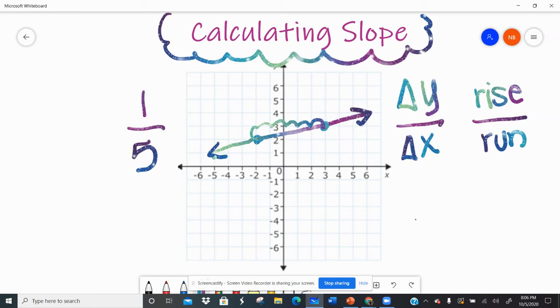But let's take the two points that we have and see if we actually get one-fifth mathematically. So my first point is negative two, positive two, so I'm going to write that down. I like to write the points underneath each other. The second point is three, positive three.